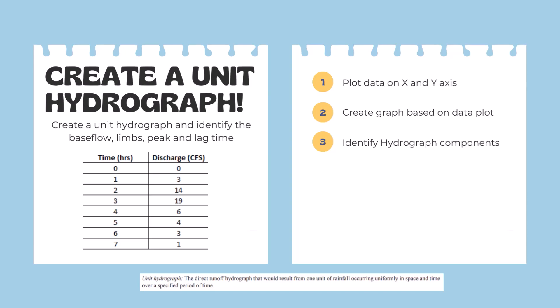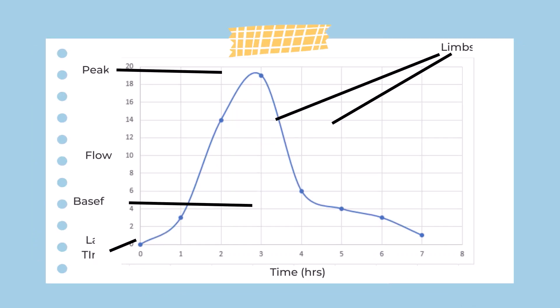If we graph it, we have a typical hydrograph shape, which starts very low, rises up very quickly to the peak, and then gradually falls off. We can see the peak is at the top there, and we can find the rising and falling limbs.